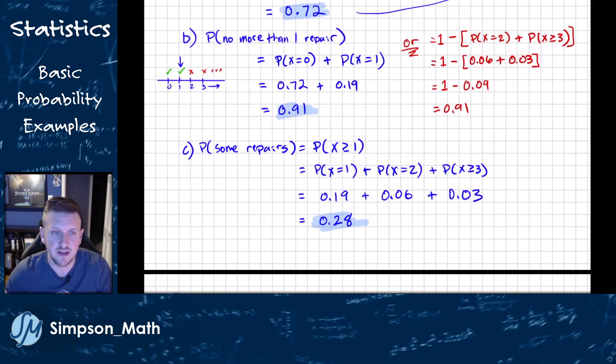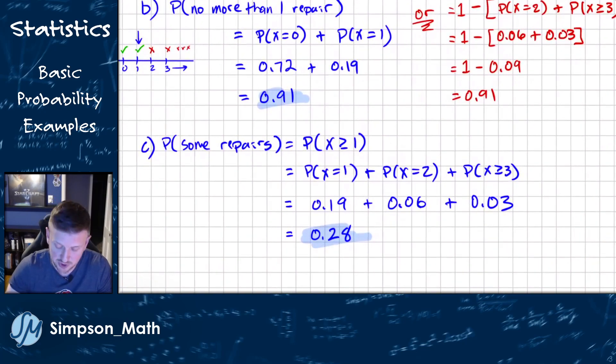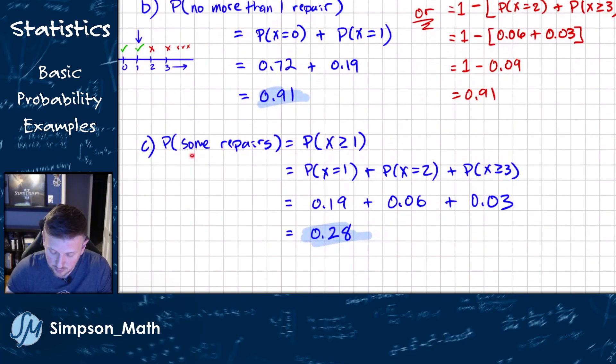Lastly on this one, if there's just some repairs, we're being asked for just some repairs. Well, some repairs is if I have one repair, that's some, I got something, I got some amount of repairs. That's one, two, three, or whatever. So basically not zero.